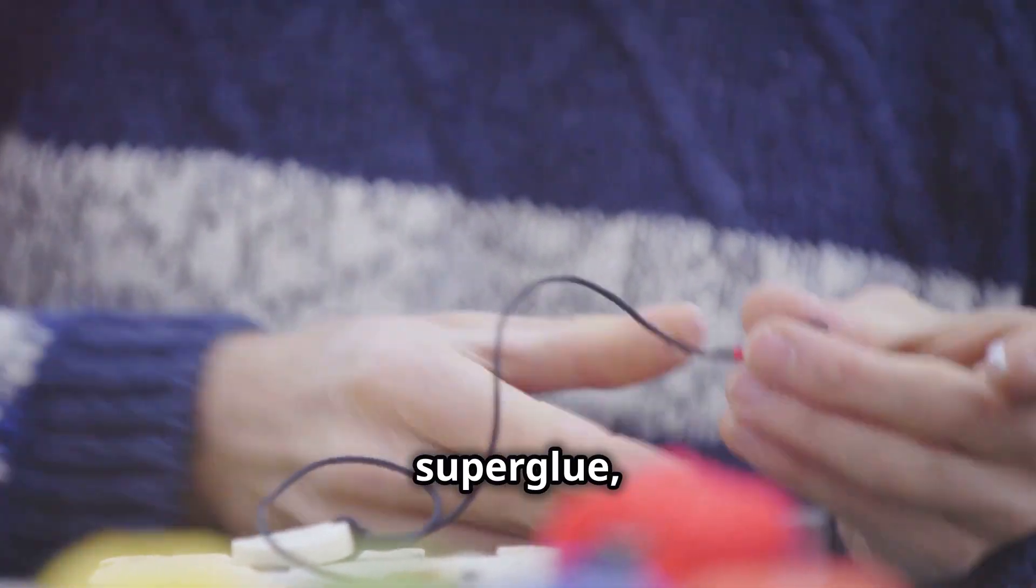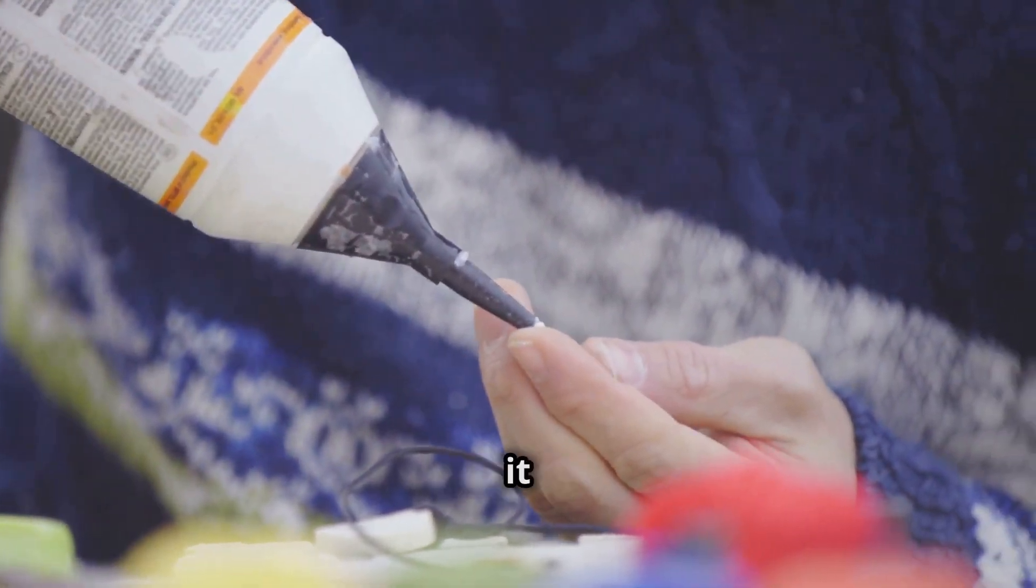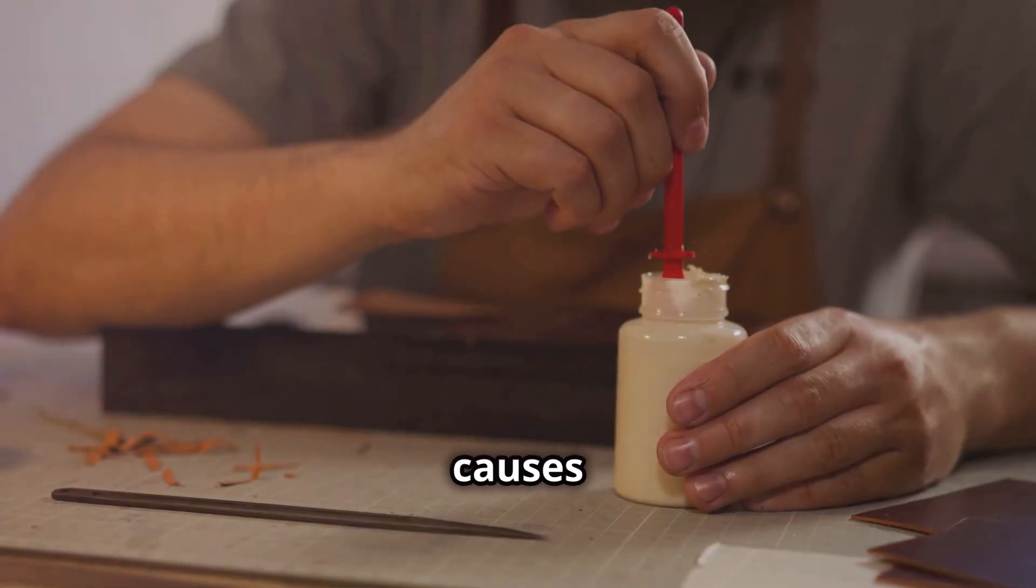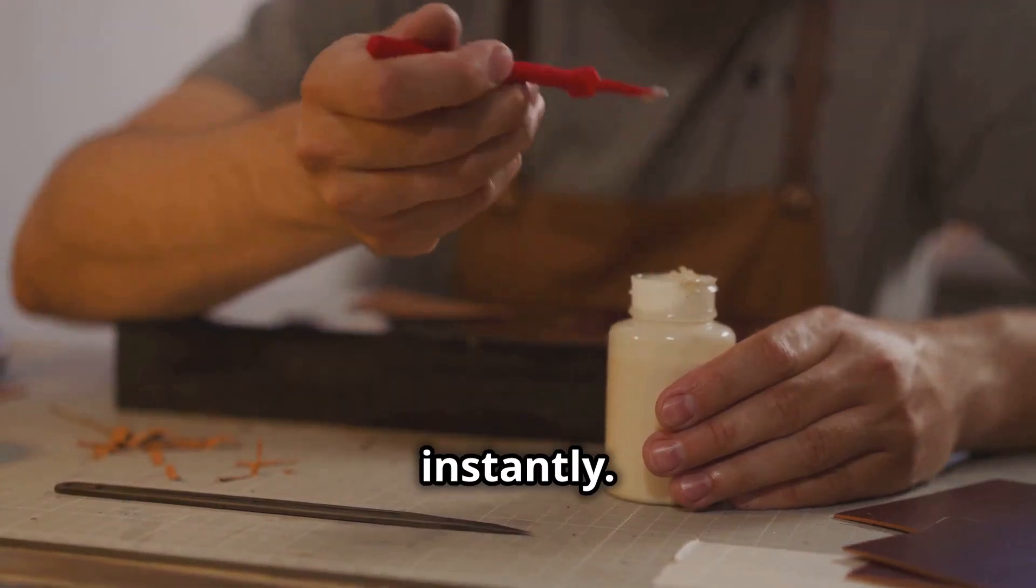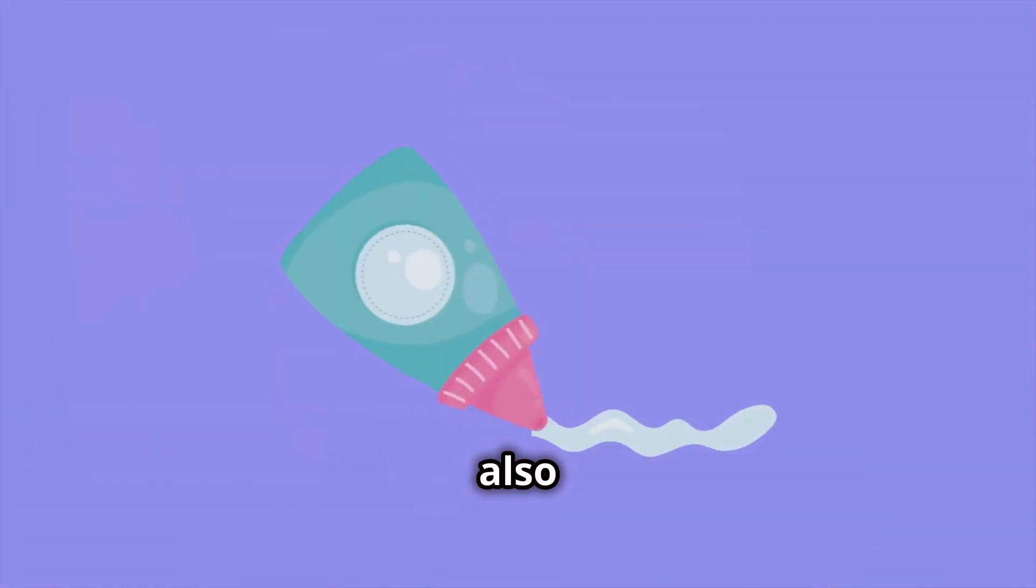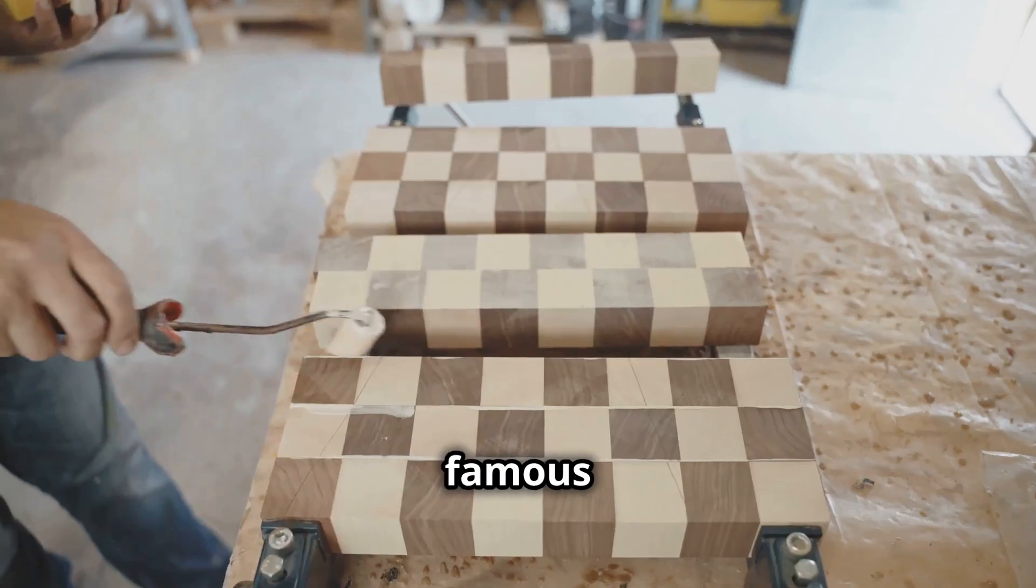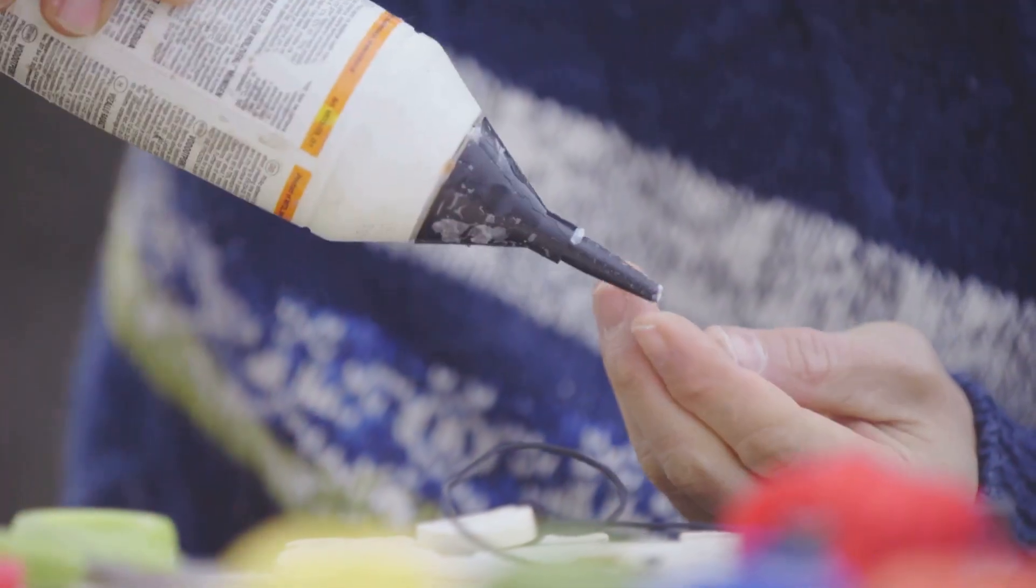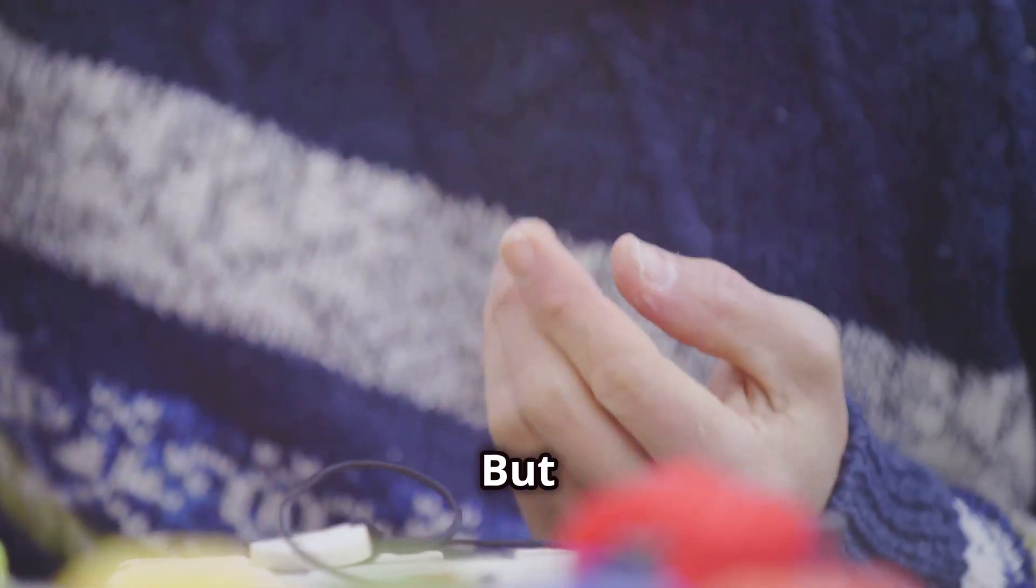On the other hand, we have reactive adhesives like super glue, which undergoes a chemical reaction when it comes into contact with moisture, usually from the air or the surface it's applied to. This reaction causes the glue to harden almost instantly. Super glue, also known as cyanoacrylate, is famous for its fast-acting and incredibly strong bond.